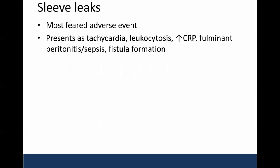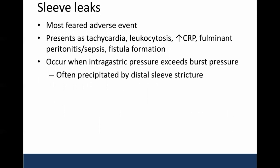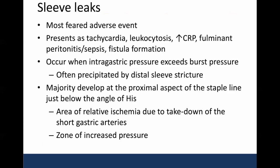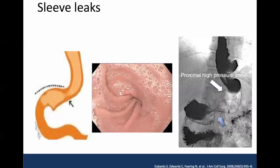Moving on to the bulk of this talk, which will cover sleeve leaks — sleeve leaks are very much the most feared adverse event following sleeve gastrectomy. These present with tachycardia, leukocytosis, and increase in inflammatory markers like CRP. They can present as fulminant peritonitis or sepsis, and also eventually lead to fistula formation. They are thought to occur when the intragastric pressure exceeds the burst pressure, typically precipitated by a distal sleeve stricture. The majority develop at the proximal aspect of the staple line just below the angle of His, as this is an area of relative ischemia due to takedown of the short gastric arteries, and also a zone of increased pressure.